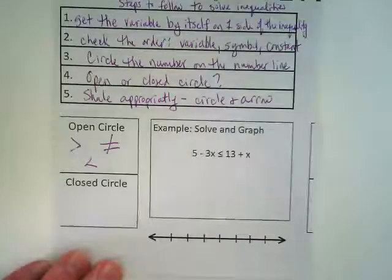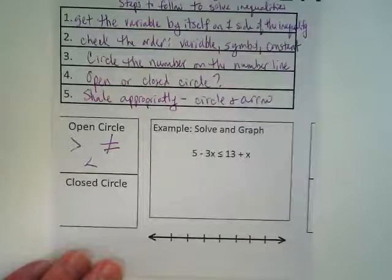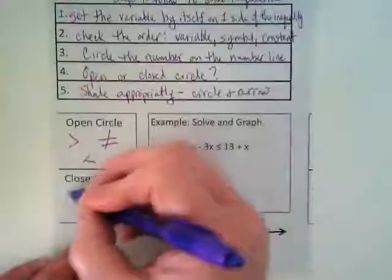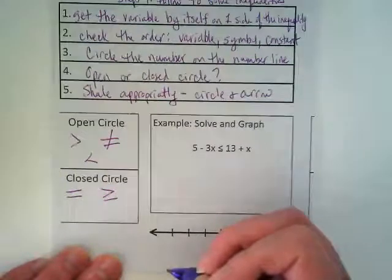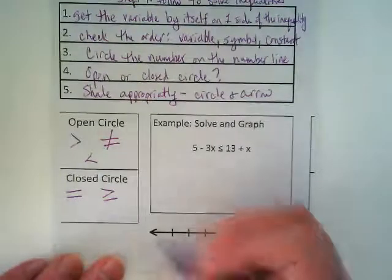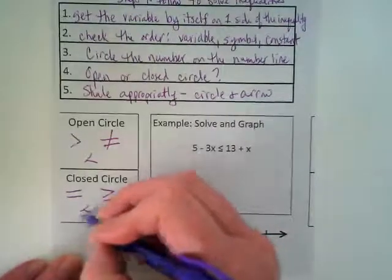What gets closed circles? Anything that's equal to: greater than or equal to, less than or equal to.